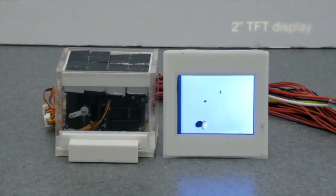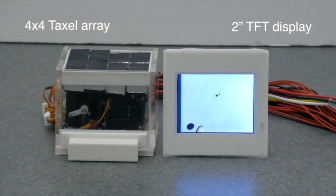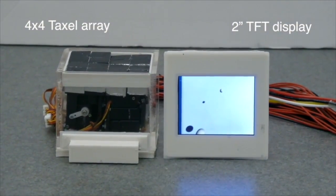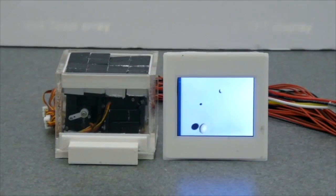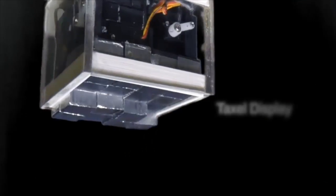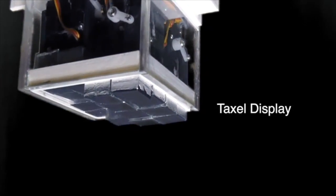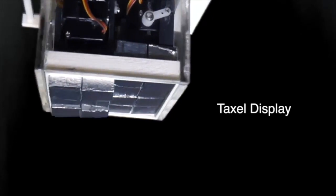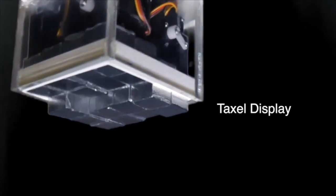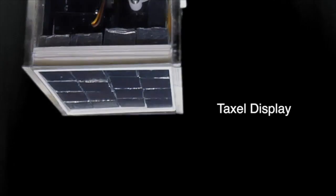Retroshape is composed of a 2-inch TFT display and a 4x4 taxel array, actuated using 16 miniature servo motors. Each pixel on the screen has a corresponding tactile pixel, or taxel, on the back of the watch face, allowing the virtual world to be extended to the physical space on the watch's back.